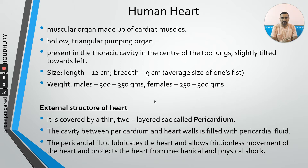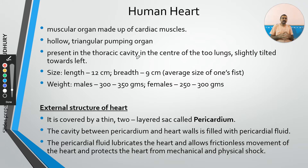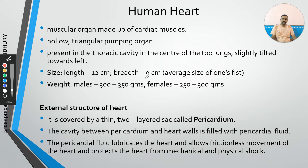Now, the most important organ: the human heart. It is a muscular organ made up of cardiac muscles. It is a hollow, roughly triangular pumping organ present in the thoracic cavity, surrounded by and in between the lungs, slightly tilted towards the left. Its size is approximately 12 cm in length and 9 cm in breadth — comparable to the size of one's fist. The weight is around 300–350 grams for males and 250–300 grams for females.